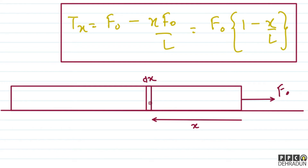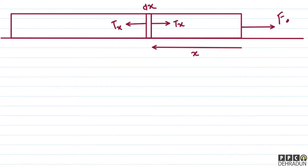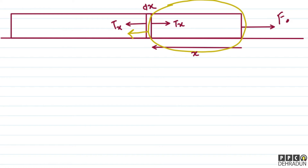You can say that this is a small element of dx thickness. You can see that one force acts on one side and another force acts on the other side — this is T(x) and the other is T(x+dx). I have drawn the free body diagram for this element. The left portion pushes to the right, so we can see that the element has tension acting in the right direction.